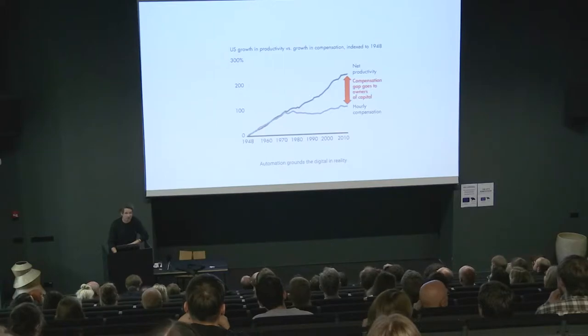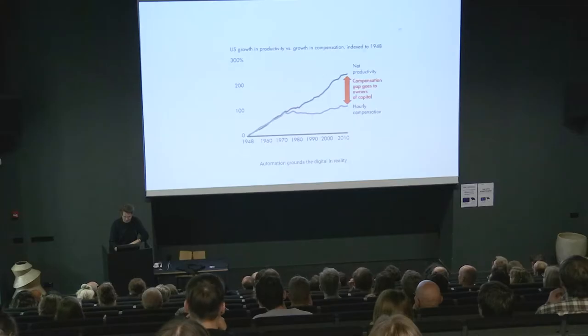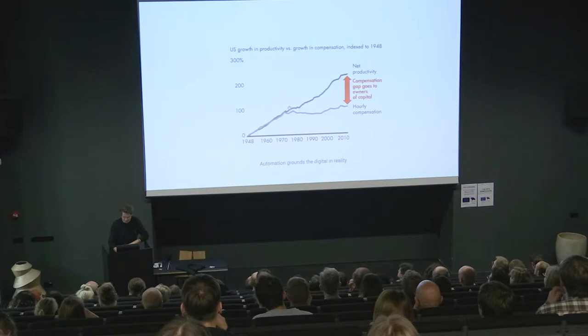Automation — I think this graph is the one that defines almost everything going on today around us, from Donald Trump to populism to climate change to the housing crisis. It's essentially the moment that automation really hits the economy, around here, with a bit of help from some willing politicians around 1970, which means productivity goes up and compensation goes down. If a robot does your job, you don't get paid. That's called the compensation gap.